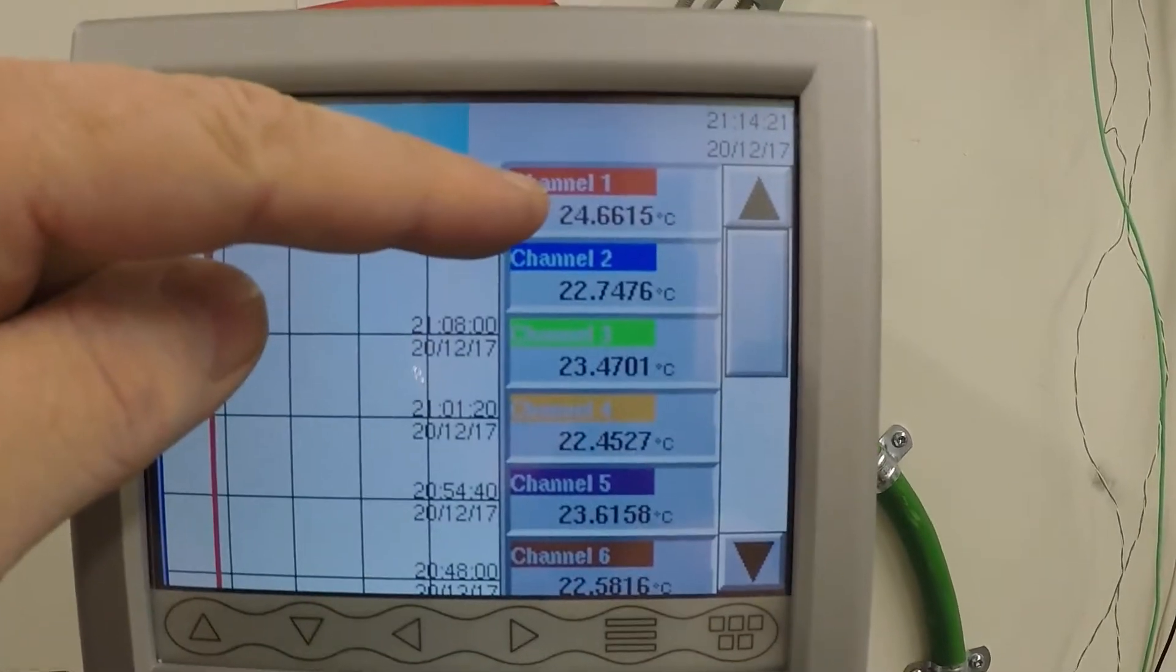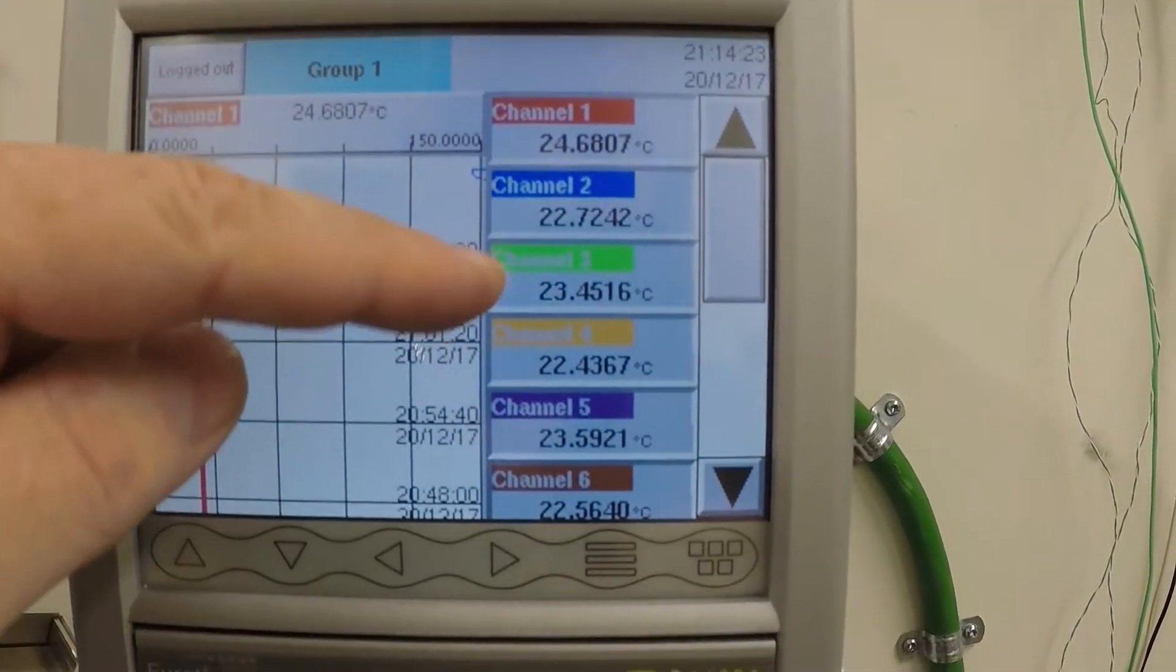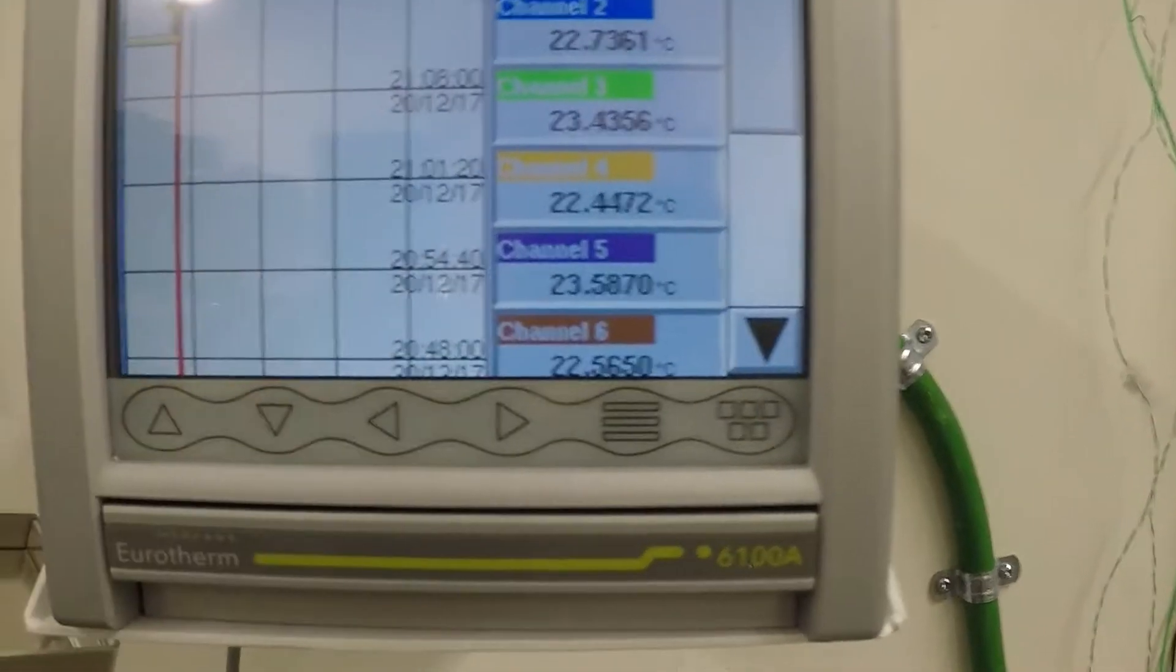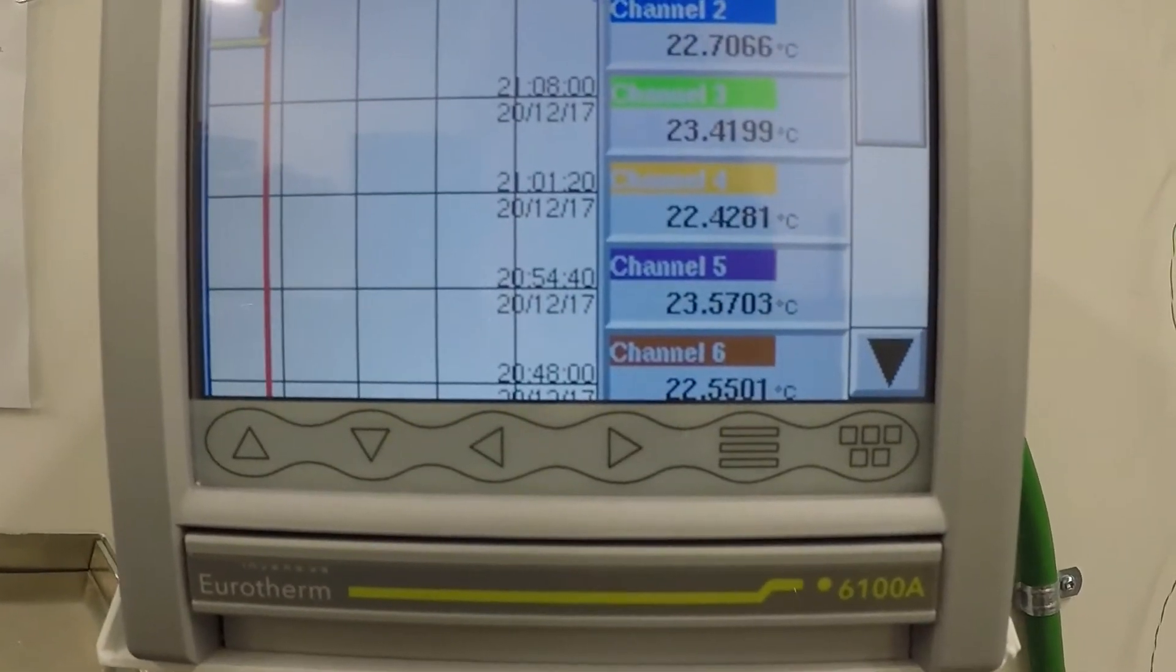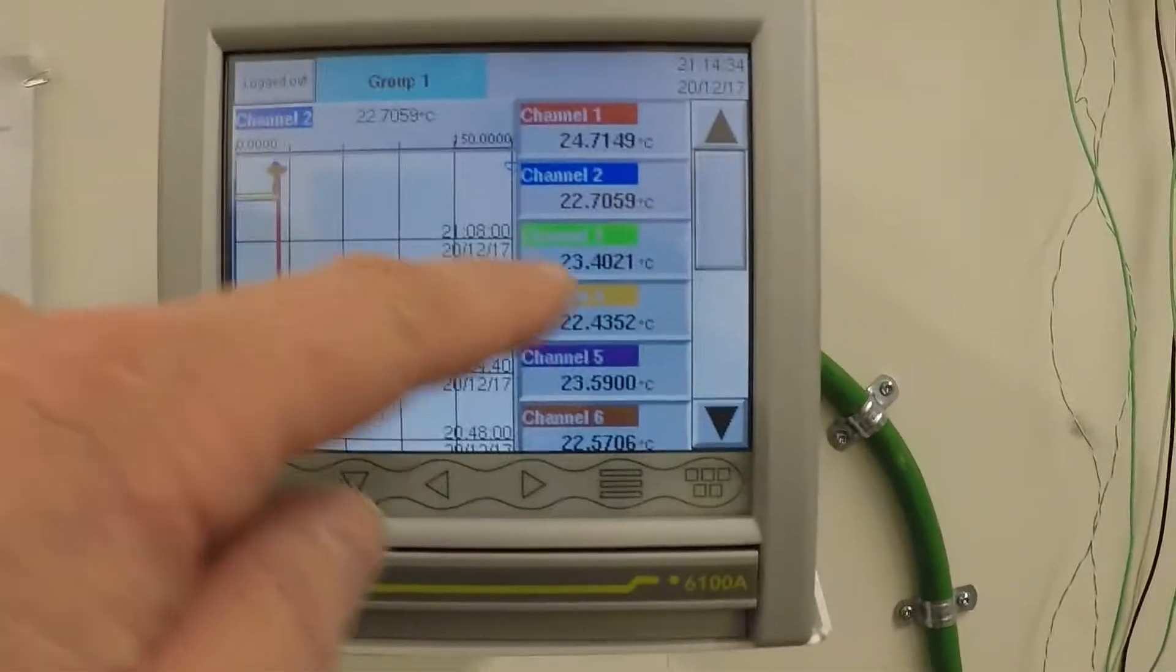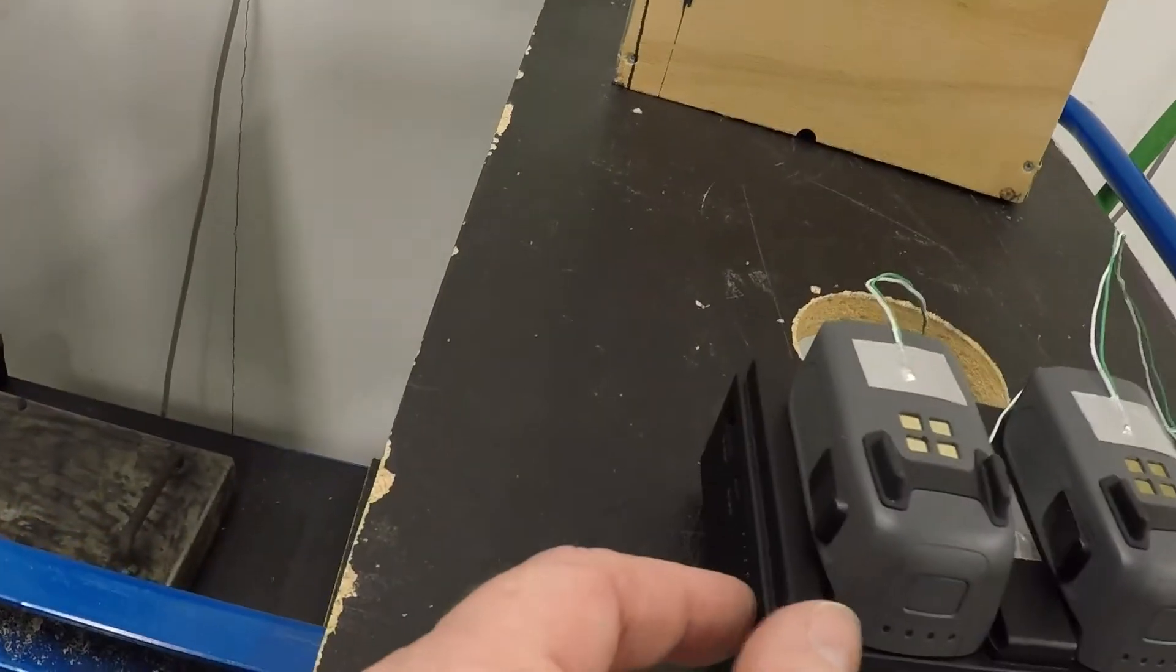Here we have the temperature in the room. Battery one, between the batteries, battery two, between the batteries and battery three. Approximately the same because I just touched them. Let's start it.